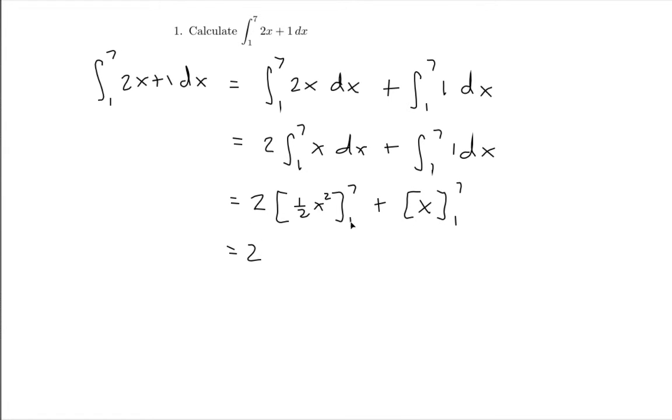So what this 1 and 7 mean is that I should plug in 7 into this function which becomes one-half times 7 squared minus what I get when I plug 1 into this function which is one-half times 1 squared. And then for this function I do the same thing, I plug in 7 so this becomes 7 and then I subtract off what I get when I plug in 1 which is just 1.